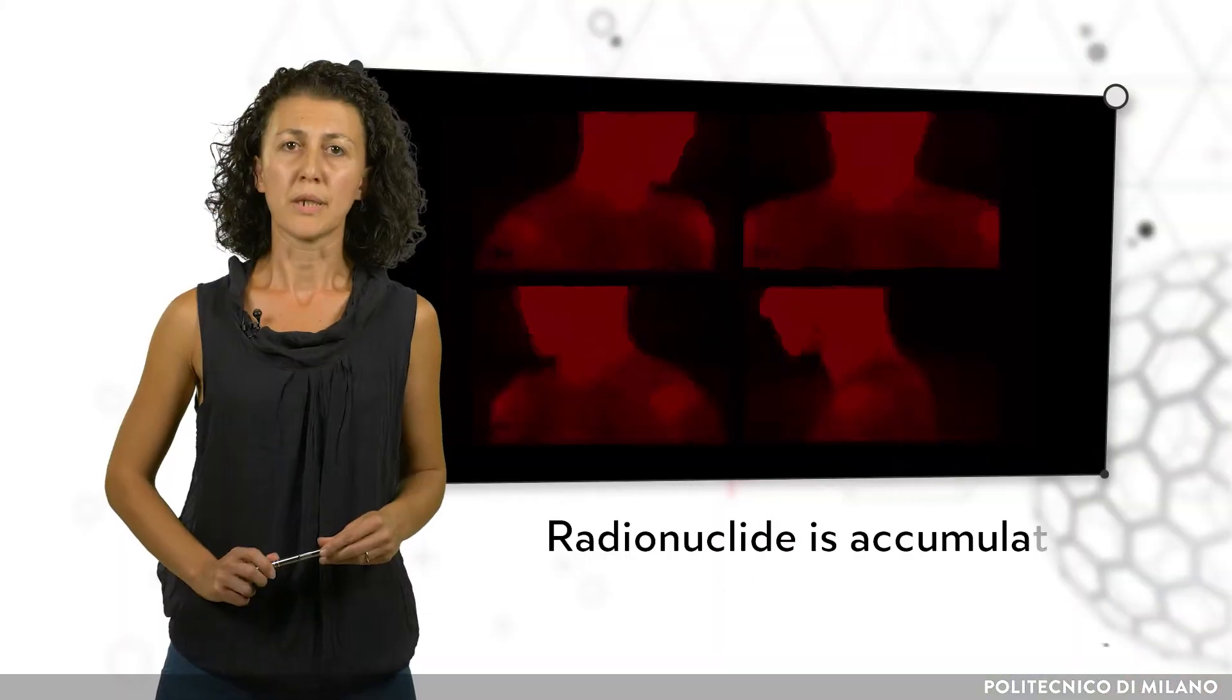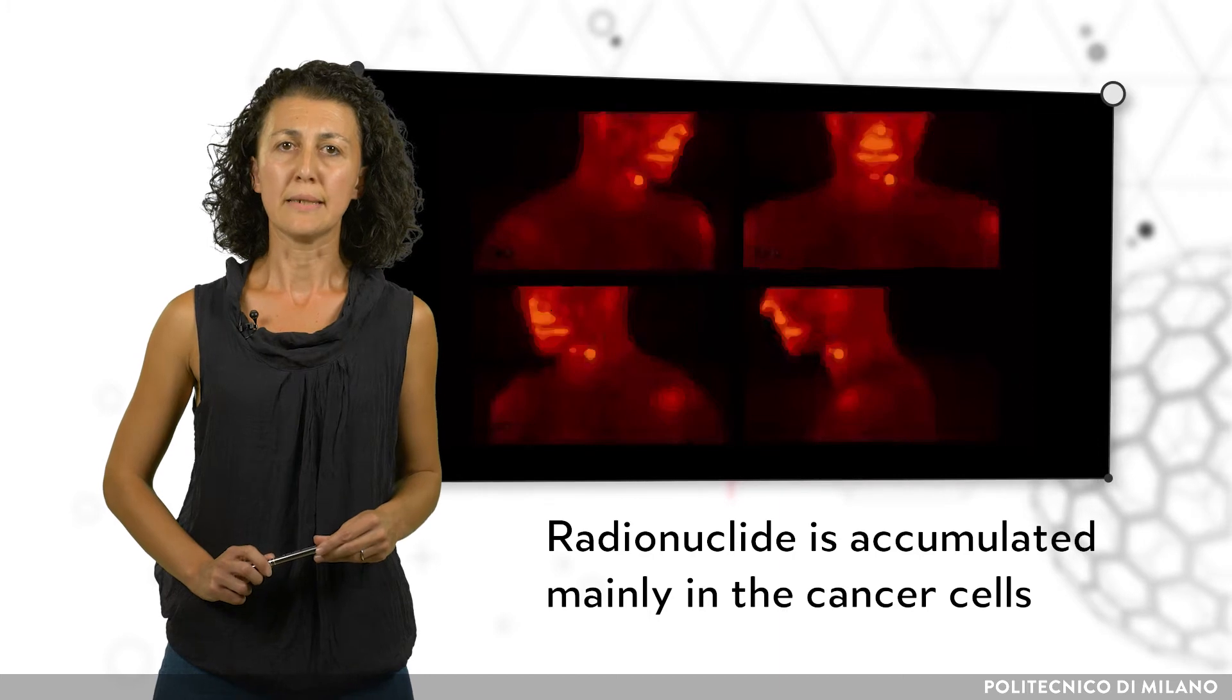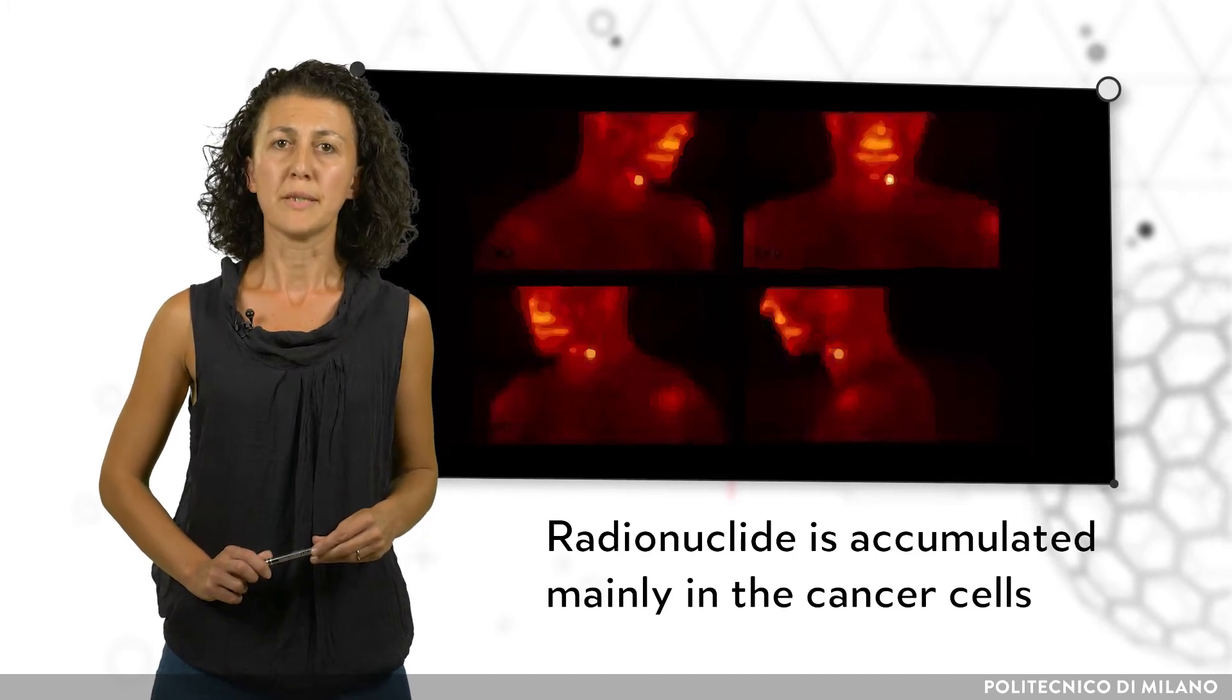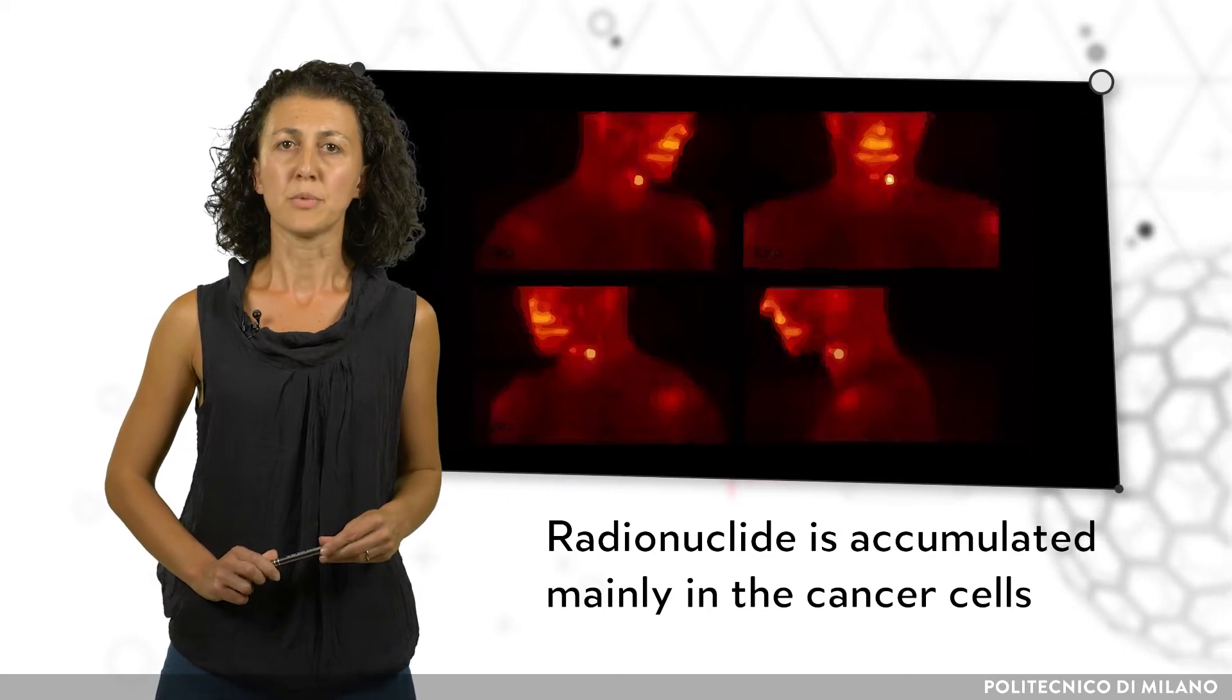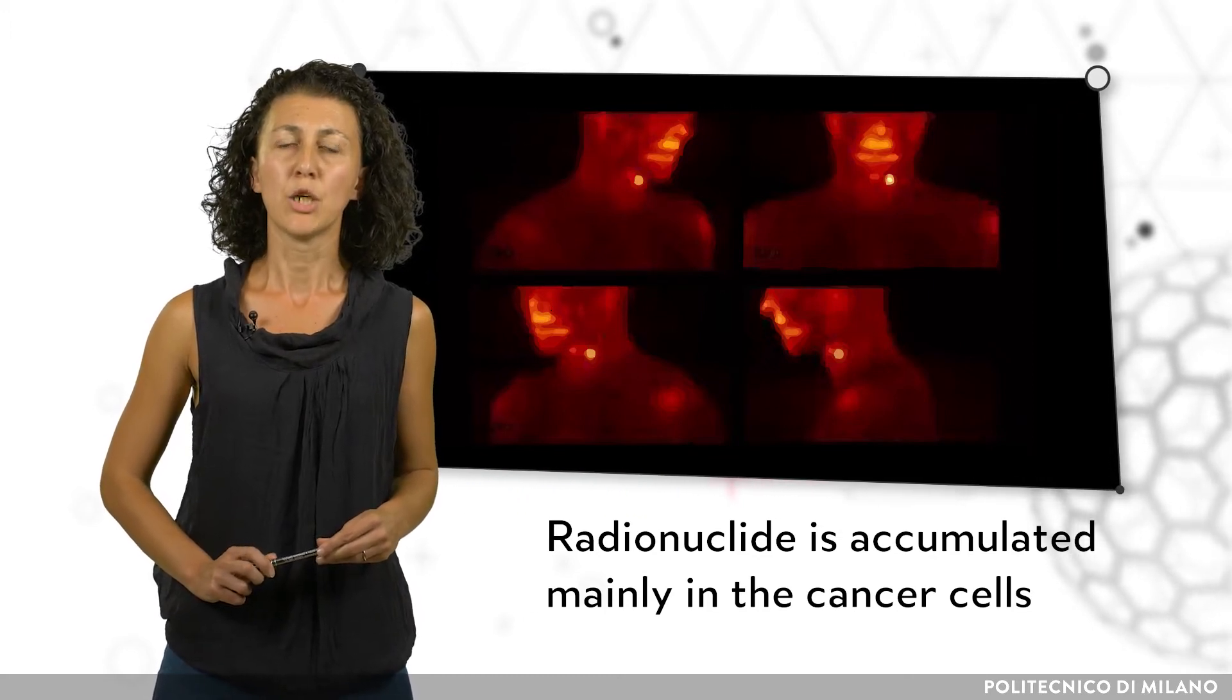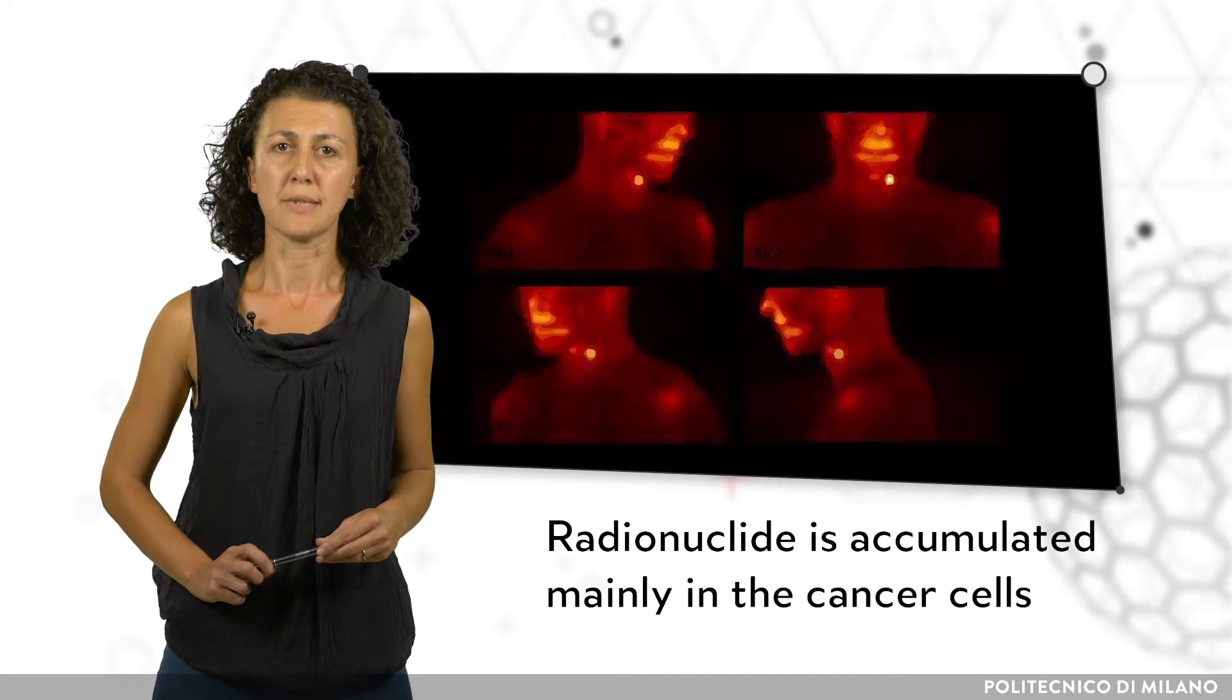The radionuclide is accumulated mainly in the cancer cells and so during the PET scan, the radiation emitted by the radioactive pharmaceutical is visualized using a special imaging system.